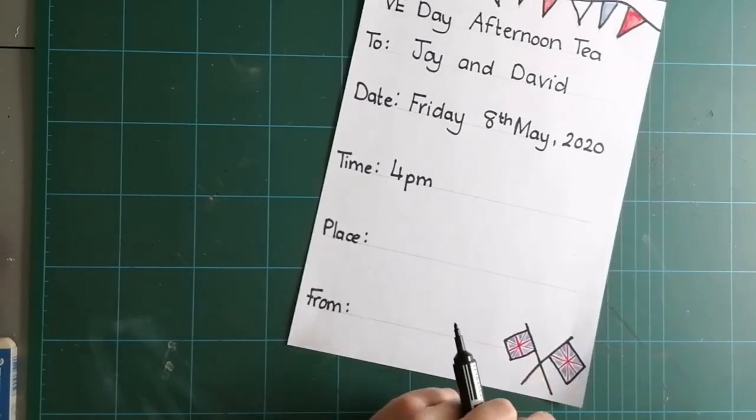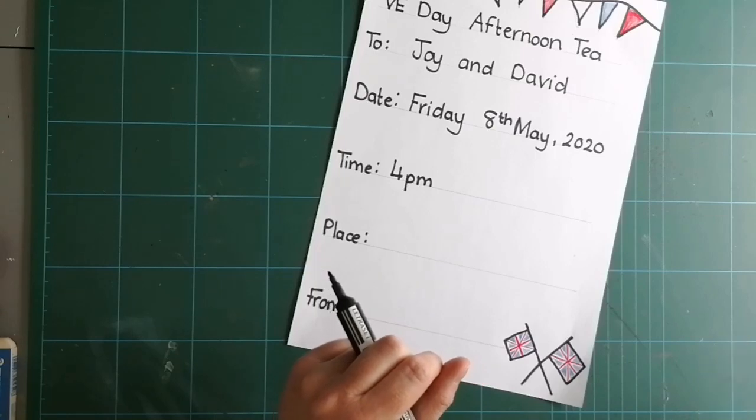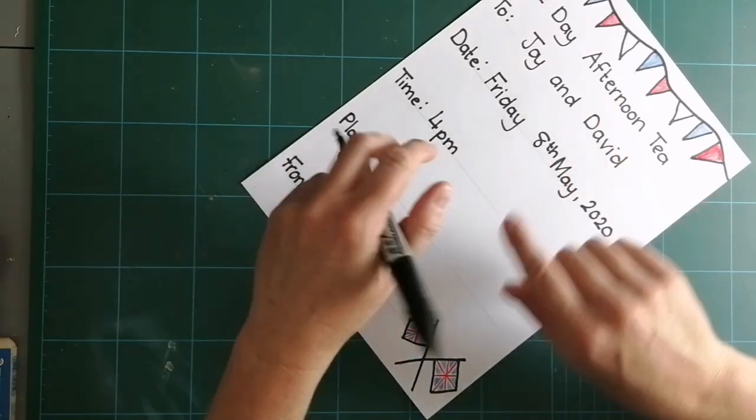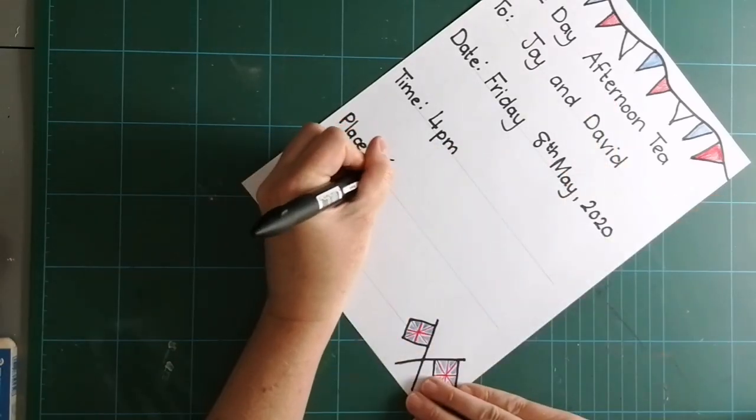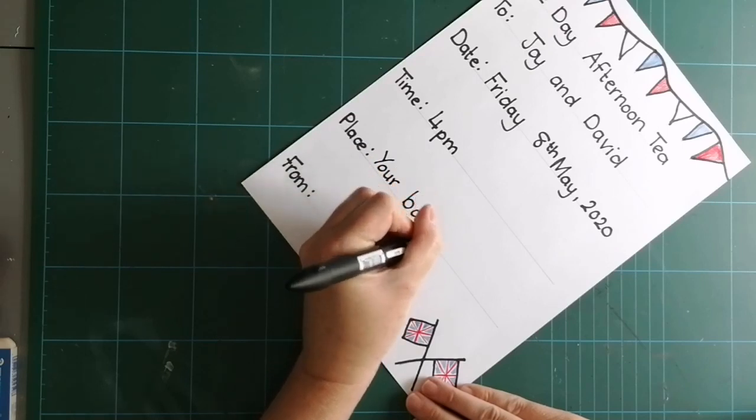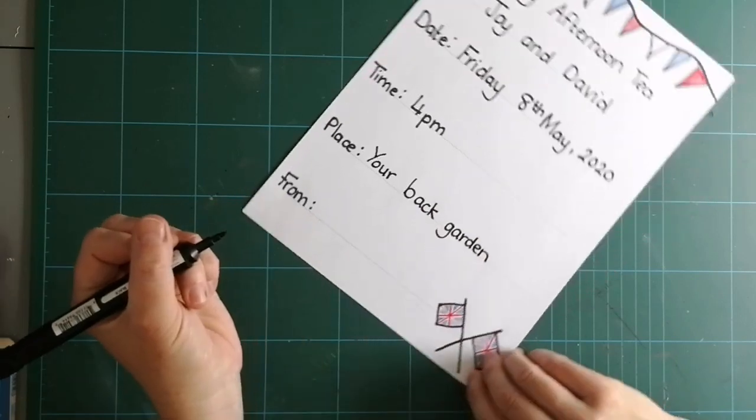Place. Now then, if this was having a, if this was a birthday party, I might say Dragon's Den, or I might say Aberdare Park. But, it's going to be in her own back garden. So, I'm going to write, because I'm sending it to them, I'm going to say, your back garden. Okay.